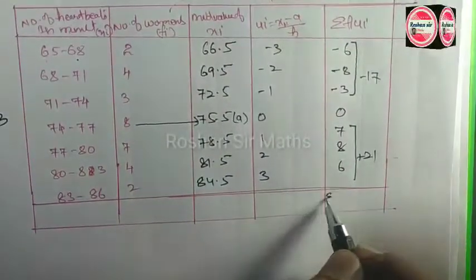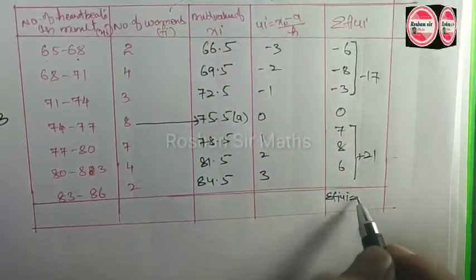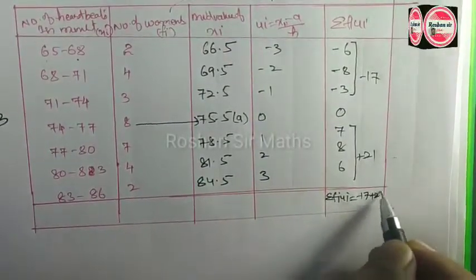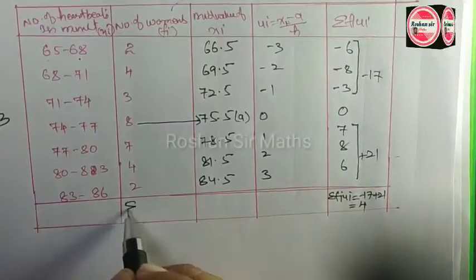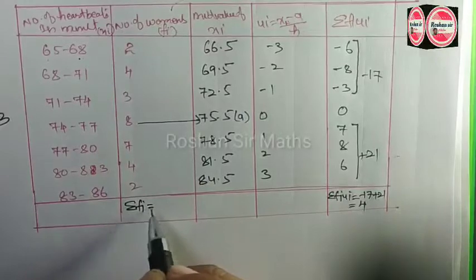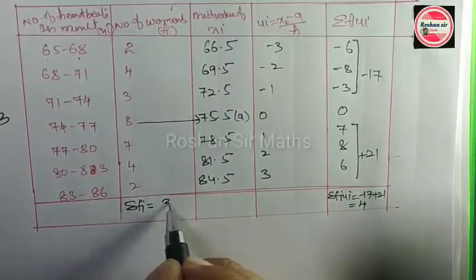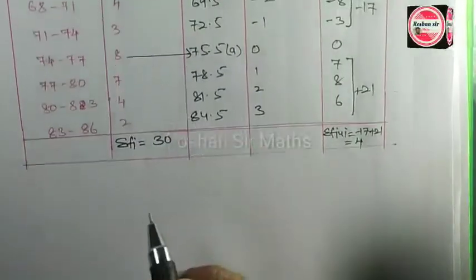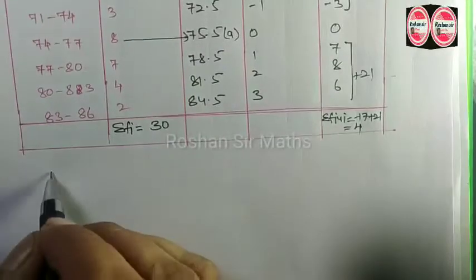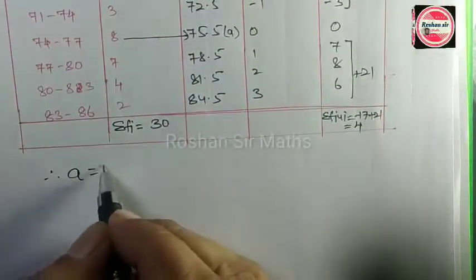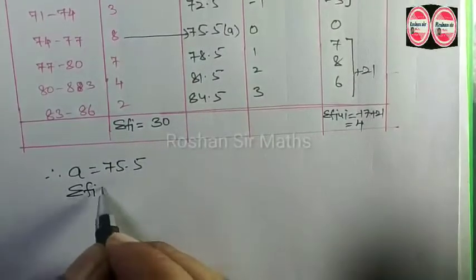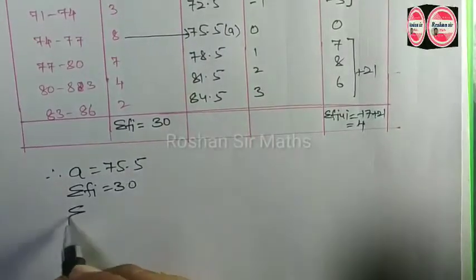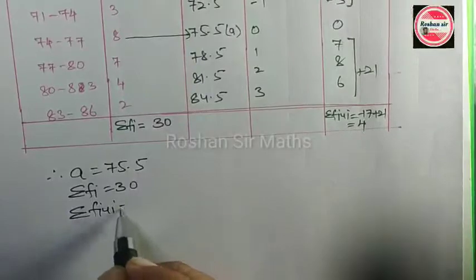Here we write Sigma FiUi equals -17 + 21. If we add these we get 4. Sigma Fi equals 30. We also have H equals 3.